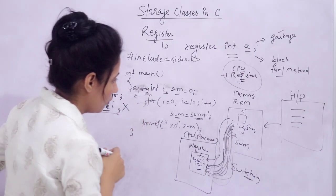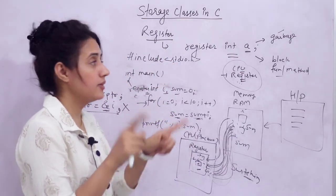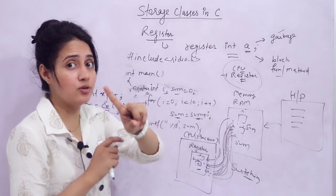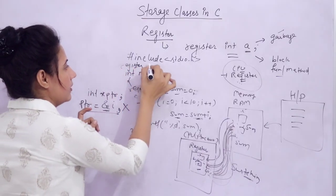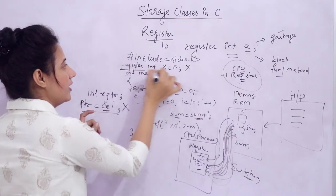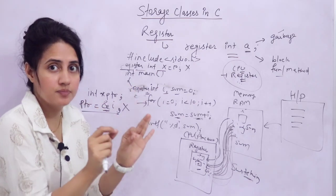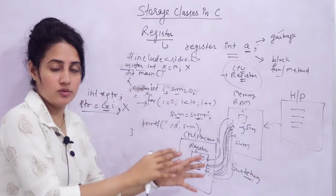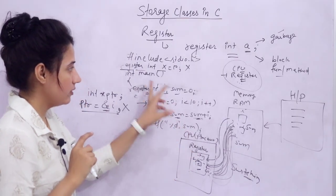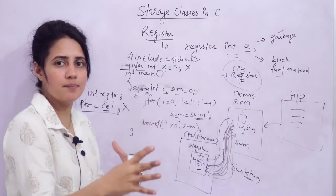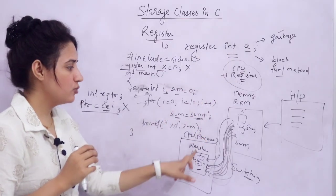So why do we use register? If we want to store a local variable into CPU register for faster access, we use register storage class. Global declaration is not allowed for register variables — same as auto. For example, 'register int x = 10' outside main would give an error. Only local declaration inside a block or function is allowed. Everything else is the same as auto — the only difference is the keyword used and where the variable is stored.